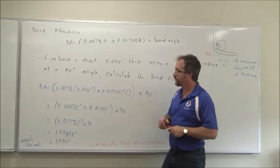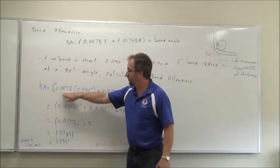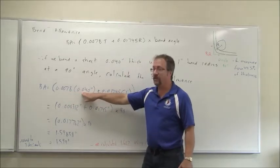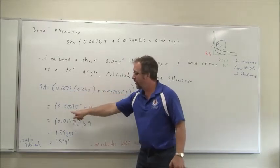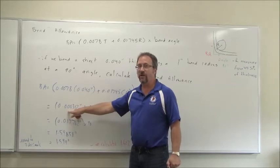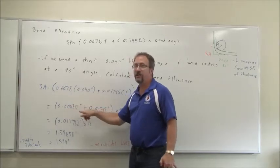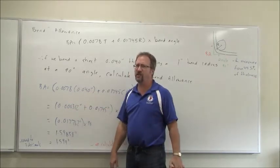So let's work through that. 0.0078 times the thickness of the metal, 0.040 inches, give you 0.000312 inches. And yes, we keep all of these digits because we're getting in some very small measures.